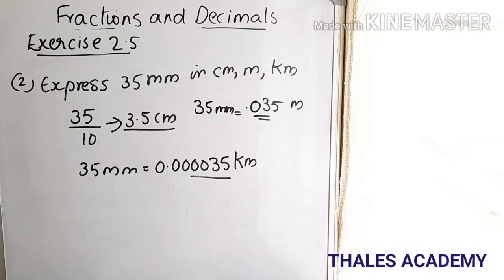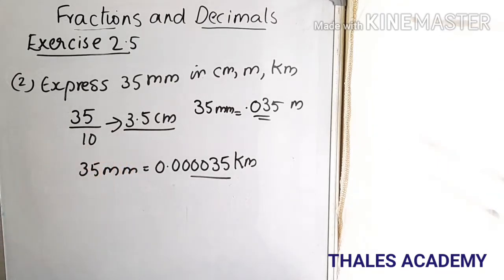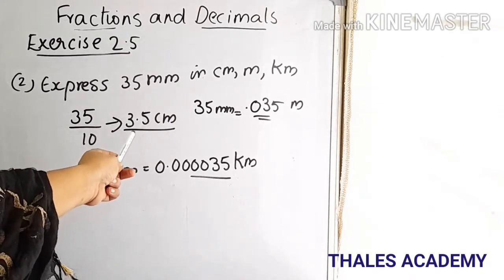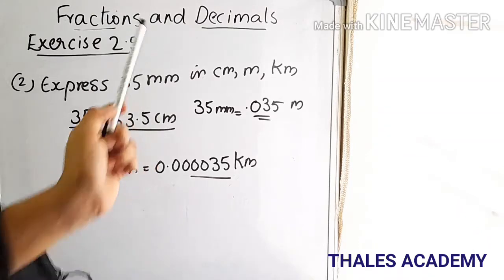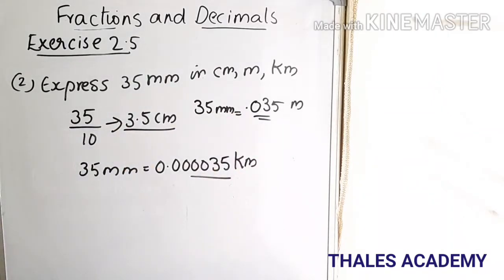Express 35 millimeters in centimeter, meter, and kilometer. To convert 35 millimeters to centimeters, divide by 10 — we get 3.5 centimeters. To convert 35 millimeters into meters, divide 3.5 centimeters by 100 — we get 0.035 meters.